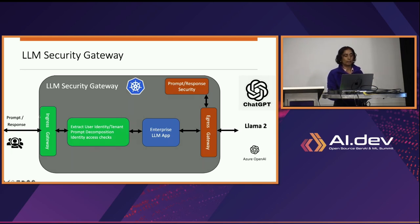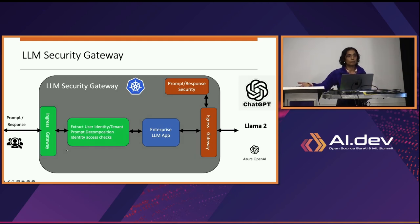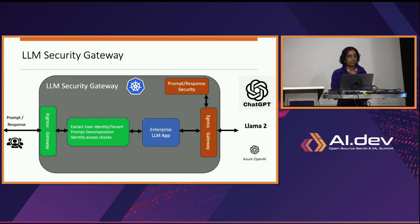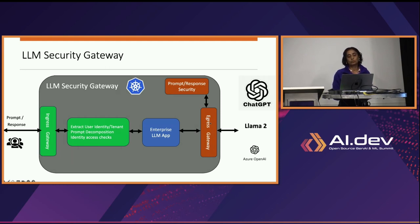The first, identity, is something we already do with traditional applications — you look at the identity and decide who has access to what. You just need to extend it to large language models, breaking down the prompt into actions your identity system can understand and applying access controls to see if the user has access to what it's asking. After it flows into the enterprise response, that's something new — that's what my demo focuses on.